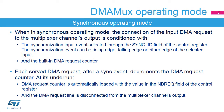Each DMA request line multiplexer can individually be set to synchronous operating mode by setting the synchronization enable, or SE, bit in its corresponding multiplexer channel control register, or DMA MUX CXCR. The DMA request router has multiple synchronization inputs, which are connected in parallel to all multiplexer channels. When a multiplexer channel is in synchronous operating mode, the effective connection of the selected input DMA request line to the multiplexer channel's output is conditioned with events on the selected synchronization input and on a built-in DMA request counter.